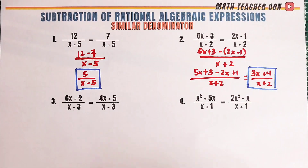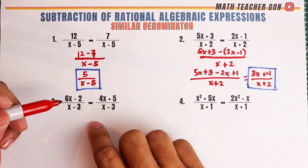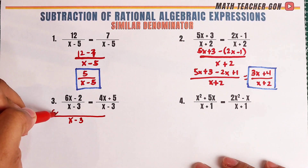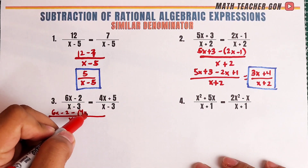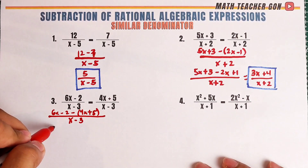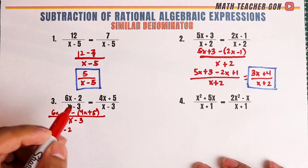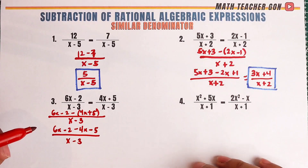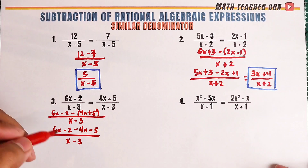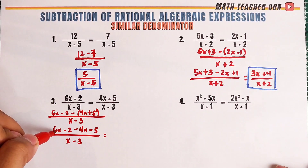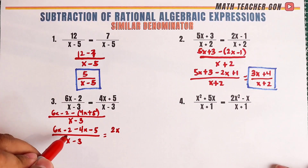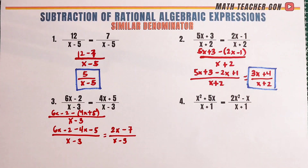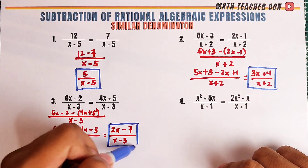Let's move on with example number 3. The denominators are both x minus 3, so we copy that as our denominator: x minus 3. For the numerator, we have 6x minus 2, copy the minus sign, then in parenthesis, 4x plus 5. We multiply the signs: this becomes 6x minus 2, negative 4x minus 5, over x minus 3. Combining like terms: 6x minus 4x is 2x, and negative 2 minus 5 is negative 7, over x minus 3. And there you have it — this is the answer for item number 3.